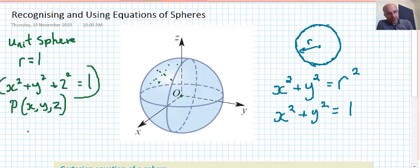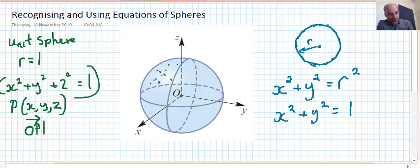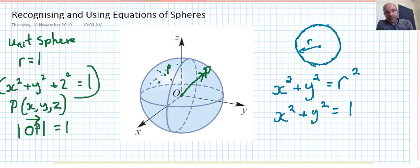We say vector OP, modulus, or the magnitude of vector OP, equals 1. Now, p can be any point there. Let's say p is on the surface of the sphere, the unit sphere in this case.